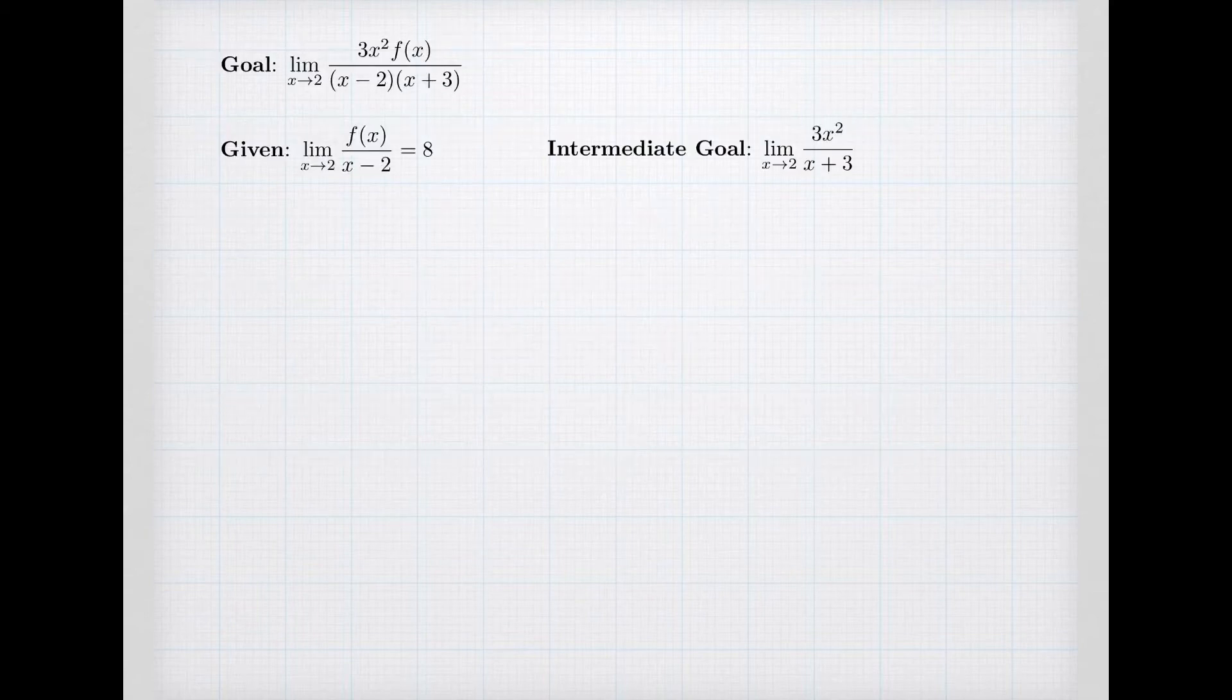Here's a summary of what we're trying to do. My goal is I'm interested in the limit of an expression as x goes to 2 where we're given the limit of one factor of that—f(x) over (x-2) has a limit of 8. In order to do that we realized we needed to calculate the limit of 3x² over (x+3). And so that's how we're going to get started.